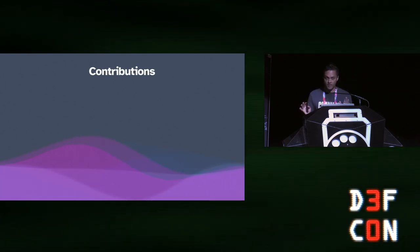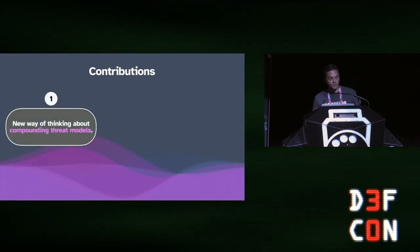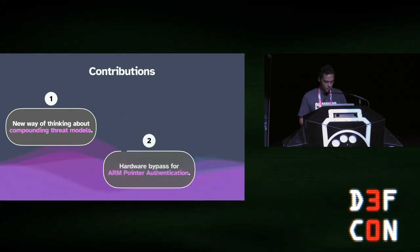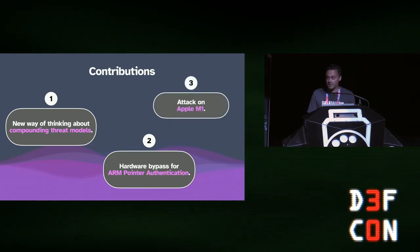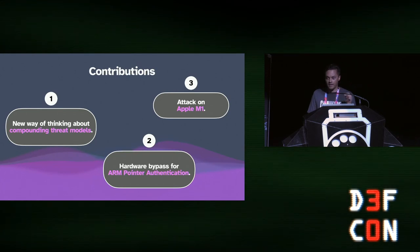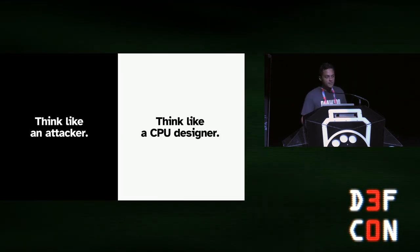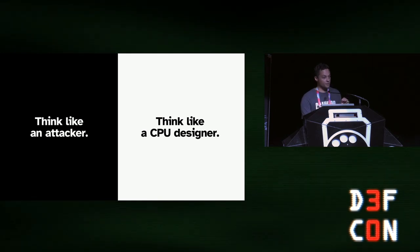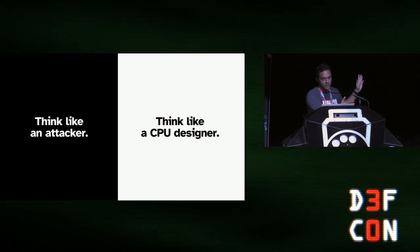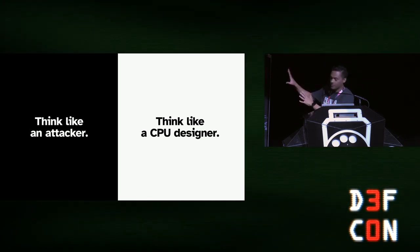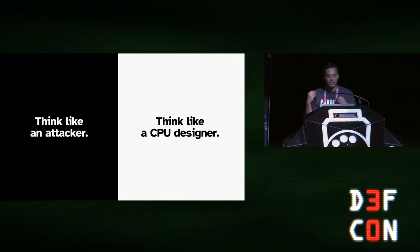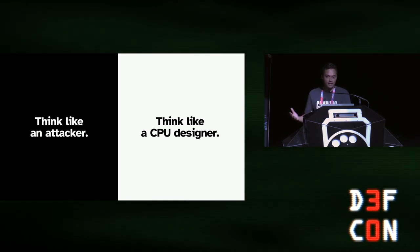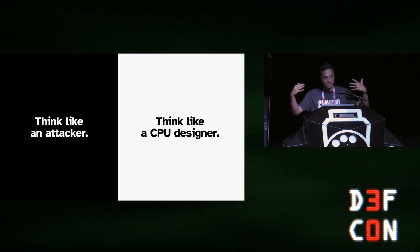PAC-MAN comes with three main contributions: first, a new way of thinking about compounding threat models; second, a hardware bypass for pointer authentication; and third, a real implementation of this attack on the Apple M1 chip. Today I want to come at the story of PAC-MAN from two different perspectives. Dark slides mean we're thinking like attackers — how can we break this? Light slides mean we're thinking as CPU designers — what choices could architects have made that lead to attacks like this?